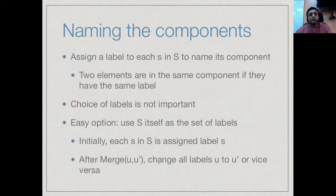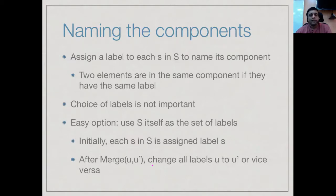The first issue is the names of the components. A simple solution is to use the elements of the set itself as the names. We don't care what names we give as long as we can check whether two elements belong to the same component — that is, whether find(u) equals find(v). Rather than manufacture labels out of thin air, we choose the labels to be the set elements themselves.